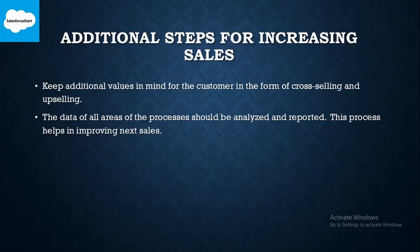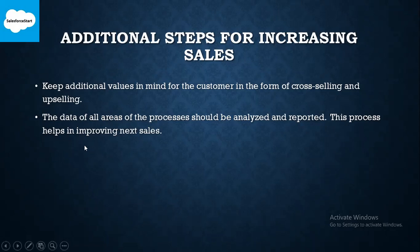These are some additional steps for increasing sales. In the Quote-to-Cash process, there are additional steps to keep in mind — like cross-selling and upselling. Cross-selling is offering related or additional products whenever a customer is willing to buy a product. For example, if a customer wants to buy a laptop, the sales rep or software should show related products like a mouse, keyboard, or printer.